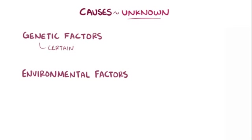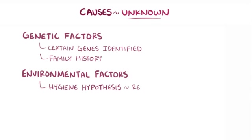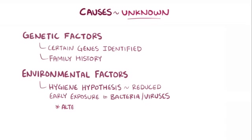Although the specific causes of asthma are ultimately unknown, it's thought to be caused by a combination of genetic and environmental factors. For environmental factors, there's the hygiene hypothesis, which suggests that reduced early immune system exposure to bacteria and viruses might actually increase the risk of later developing asthma, possibly by altering the overall proportion of immune cell subtypes.